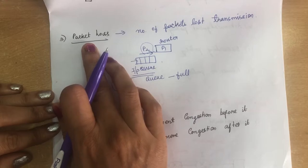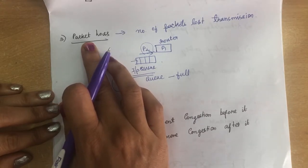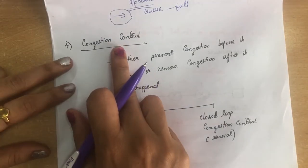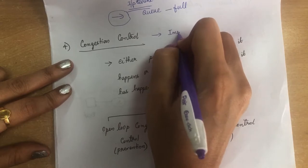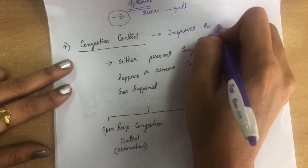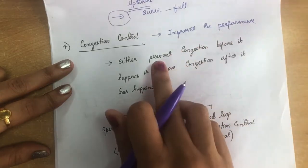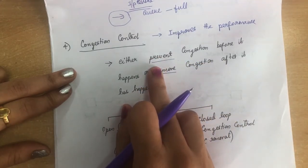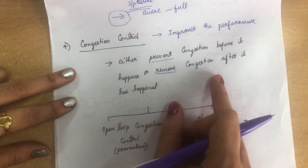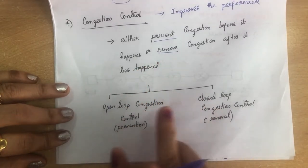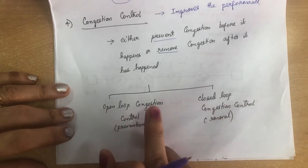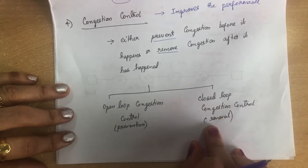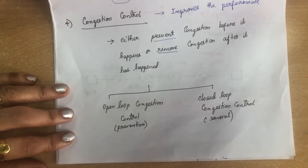There are three parameters affecting network performance: delay, throughput, and packet loss. Coming to congestion control — it improves network performance. We can either prevent congestion before it happens or remove it after it occurs. Based on this, congestion control is divided into two types: open loop congestion control (prevention) and closed loop congestion control (removal).